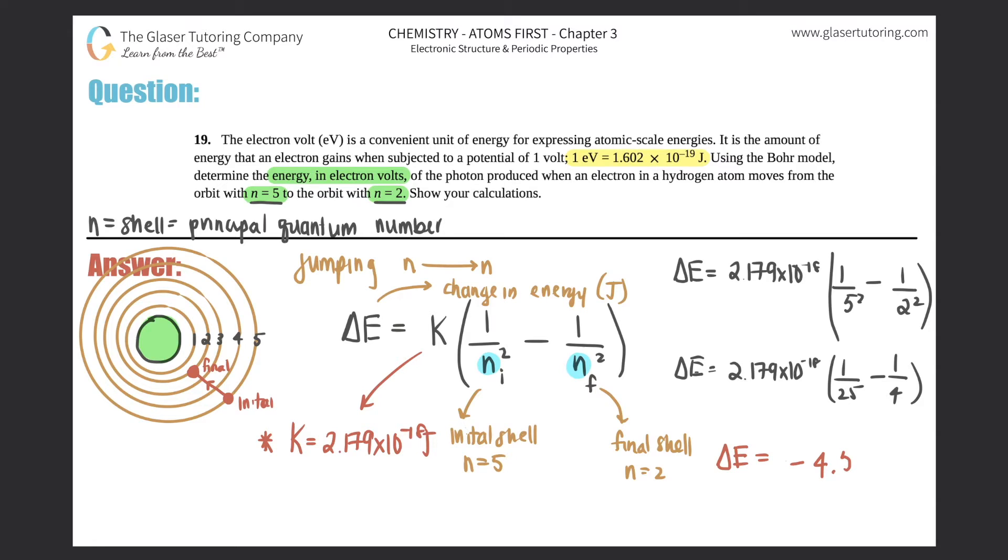And I get negative 4.58 times 10 to the negative 19th, and that's in joules. So this negative is telling you that energy actually was released. So when this electron went from the fifth shell to the second shell, energy was released, not gained in the process.